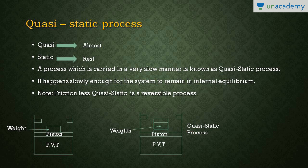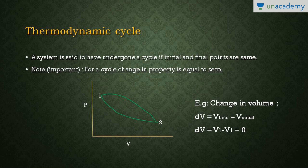The locus of these equilibrium points is known as a quasi-static process. The process carried out in a very slow manner is a quasi-static process, and a frictionless quasi-static process is known as a reversible process. So we can write: frictionless quasi-static process is a reversible process.